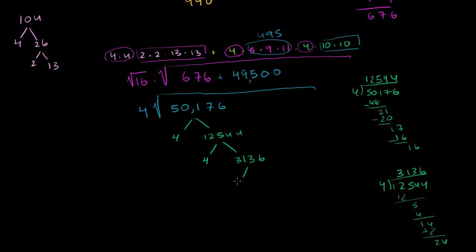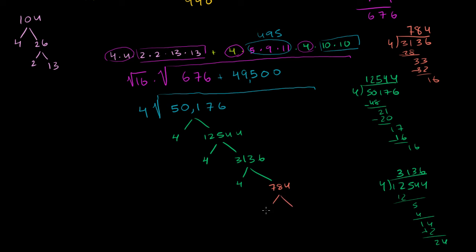Once again, 3,136 looks divisible by 4. I should have just guessed this whole thing was divisible by 16 or something. 4 goes into 3,136: 7 times, 8 times, then exactly 4 times with no remainder — giving us 784. Once again, 784 looks divisible by 4. 4 goes into 784: 1 time, 9 times, then 6 times — giving us 196.